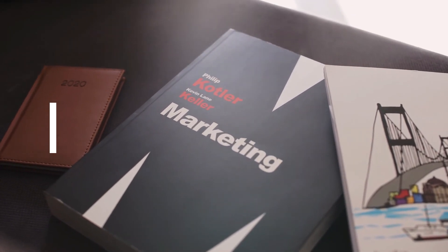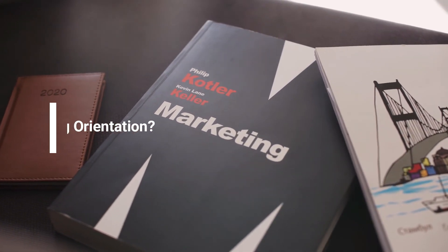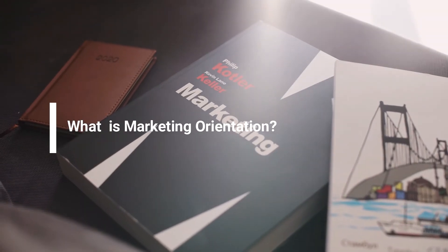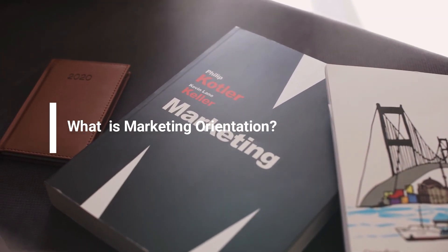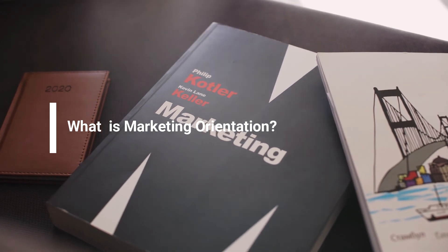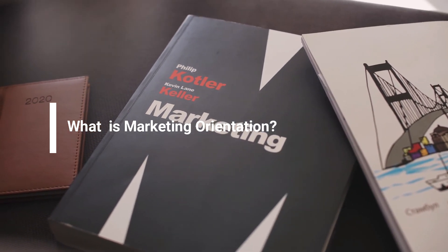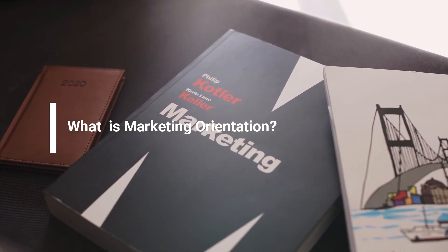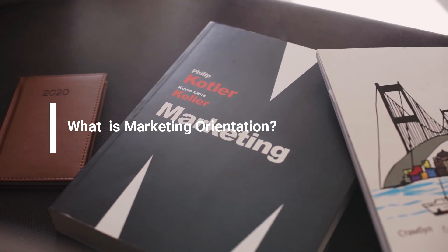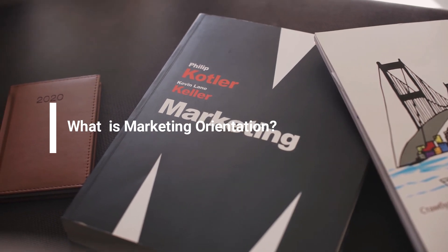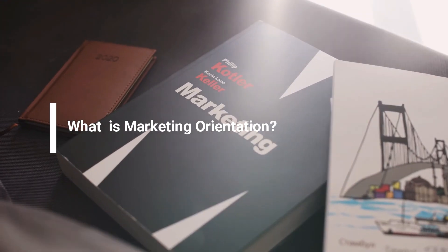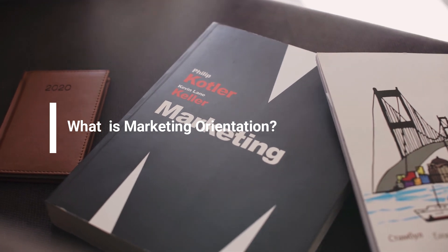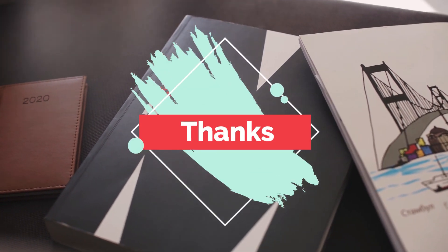Coming to the question of what is marketing orientation: marketing orientation is the orientation of an organization that thinks from the perspective of the customer. Everything in the company is looked at from the customer's perspective — for example, what the customer requires in terms of pricing and making things simple to understand. If you really like our work, please subscribe. Thank you.